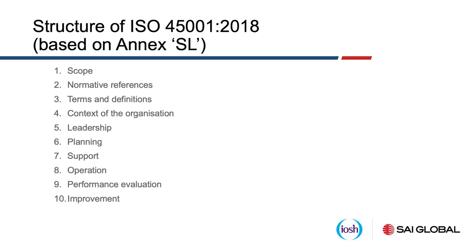What we see now is the structure of the new ISO 45001 standard. There are 10 sections, and these 10 sections are now part of what's called the standardized structure of all ISO management system standards — specifically ISO management system standards. So 9001, 14001, and other management system standards are required to stay with this structure. In addition, there is a lot of standard terminology as well. Many of the definitions are exactly the same, with some variations depending upon the actual standard. For the safety standard, we'll talk about risks and hazards; for the environmental standard, we'll talk about aspects and impacts.